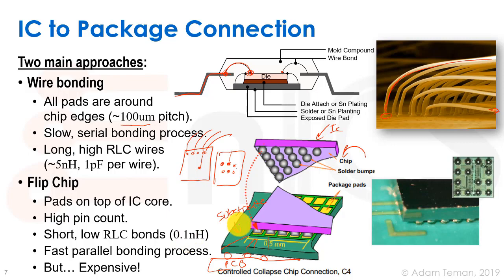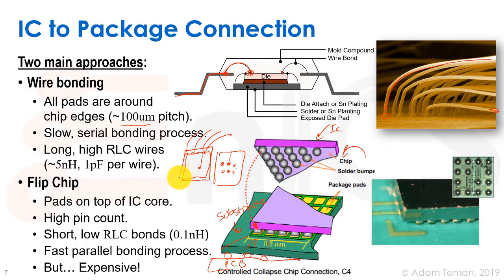Another advantage is that instead of long wires, we just have these short bumps, giving much lower inductance — about 0.1 nanohenrys. It's also quick: just place the chip on the substrate, heat it up, and everything is connected at once. And because bumps cover the whole chip area rather than just the periphery, we can get many many more pins compared to wire bonding.